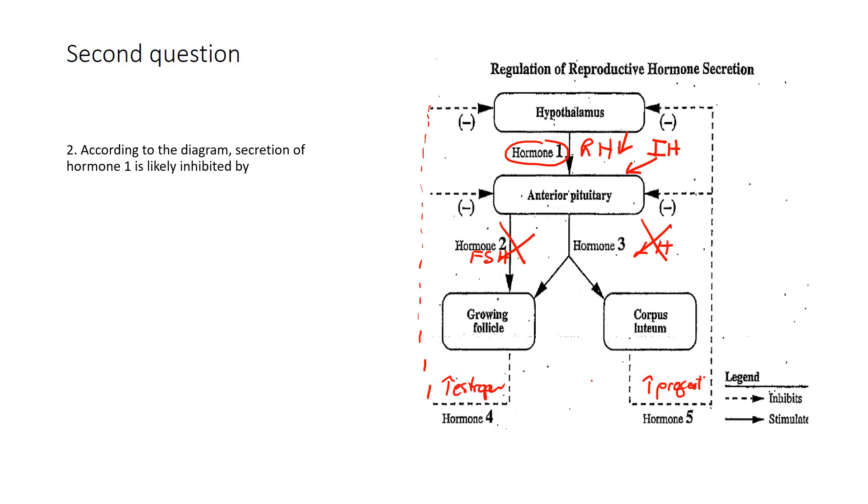Looking at the question we just filled in, what's likely to inhibit hormone one? Option A says increased levels of LH and FSH. No, that's not what happened. It was actually increased levels of estrogen and increased progesterone. The dotted line negative feedback was detected by the hypothalamus. That can't be it. Decreased levels of LH and FSH has nothing to do with that.